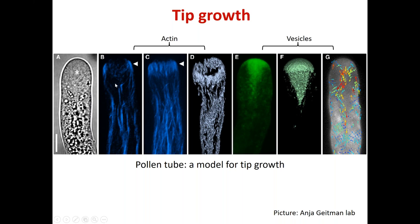You can see the actin cytoskeleton in a pollen tube: long cable-like structures and fringe-like structures at the tip. The job of these actin filaments is to orient the delivery of vesicles — you can see how densely packed they are at the tip. These vesicles deliver the new membrane components and new wall components so that the tip extends, resulting in this very polarized tip growth.